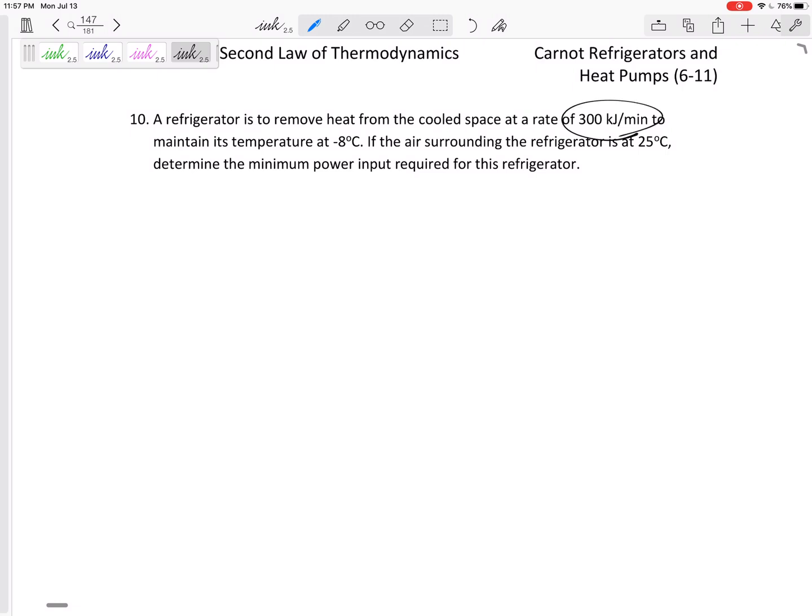A refrigerator is to remove heat from the cooled space at a rate of 300 kilojoules per minute. What is that? That is the QL, the heat that is removing from the cooled space to maintain its temperature, that is the TL. If the air surrounding the refrigerator, that is the TH, determine the minimum power input required for this refrigerator. If it was the Carnot, what is this W net in?